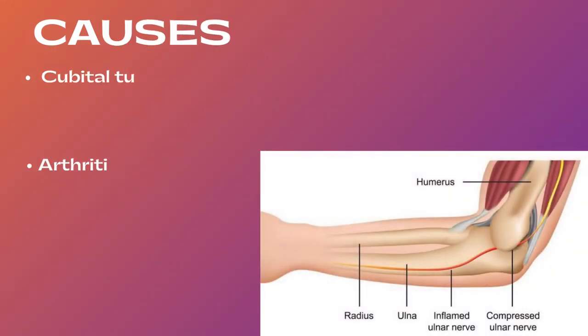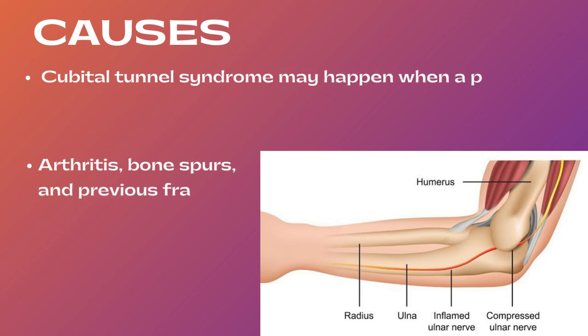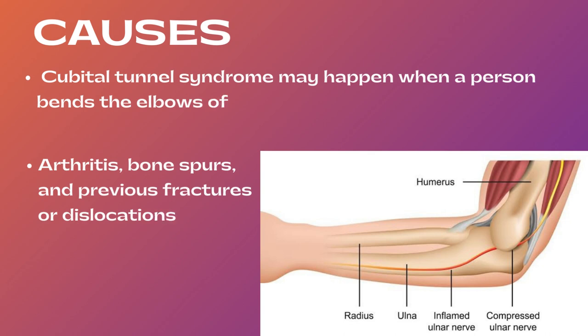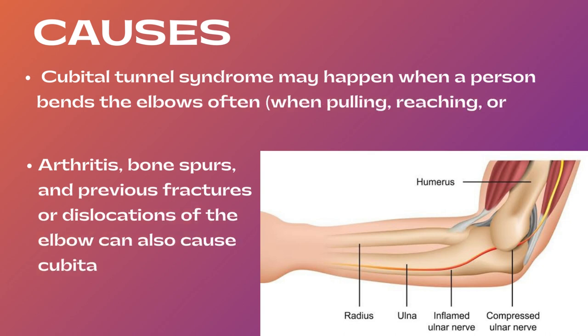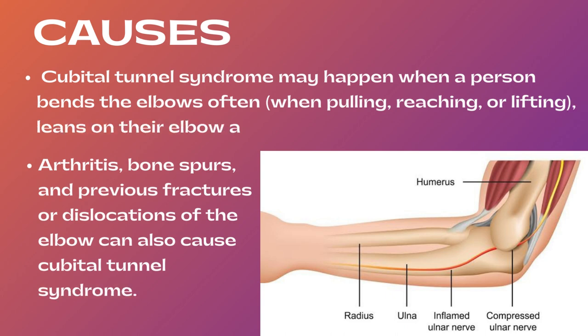After the definition, there come the causes. The causes of cubital tunnel syndrome are: it may happen when a person bends the elbow often, or leans on their elbow a lot, or has an injury to the area. Other causes may be arthritis, bone spurs, and previous fractures, or dislocation of the elbow.